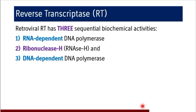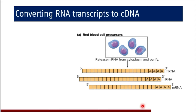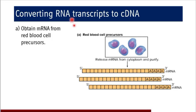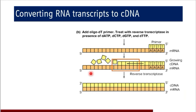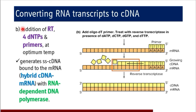Let us understand the technique of converting RNA transcripts into complementary DNA, which is utilized in genetic engineering. First, we obtain mRNA from red blood cell precursors. The mRNA is extracted from the RBC cytoplasm and purified to get pure mRNA templates. Those mRNA templates are then exposed to reverse transcriptase enzyme along with the required deoxyribonucleotides and primers at optimum temperature. Using the mRNA as a template, the single-strand complementary DNA is synthesized.